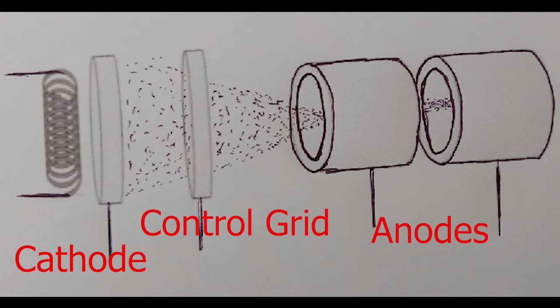The two cylindrical anodes are used as follows. The first anode is used to accelerate the electrons towards the screen, while the second anode focuses the electrons into a fine beam.